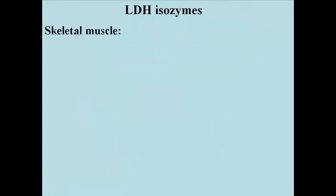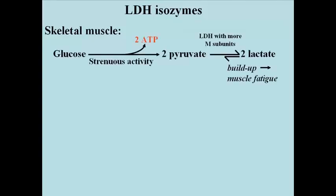Here's an explanation of how the LDH isozymes in different cell types serves our physiology. During strenuous activity, respiration cannot keep up with the demand for ATP needed to fuel skeletal muscle contraction. As a result, pyruvate builds up, and an M-rich LDH isozyme in turn reduces the pyruvate to lactate. The resulting buildup of lactic acid cannot be indefinitely sustained, causing the muscle ache you probably know as muscle fatigue.